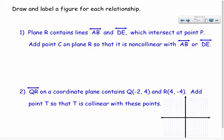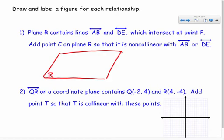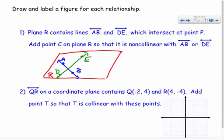Let's draw this: plane R contains lines AB and DE, which intersect at point P, and point C is on plane R. I'll draw a parallelogram and label it R. I draw line AB across the plane, then line DE intersecting it, marking their intersection as point P. Point C is non-collinear to those lines, so I'll place it anywhere else on the plane.